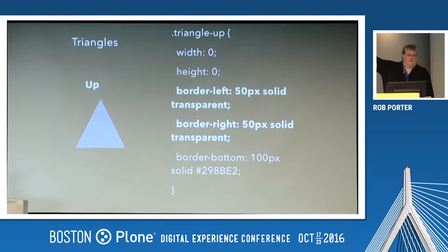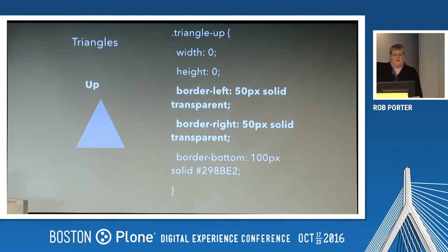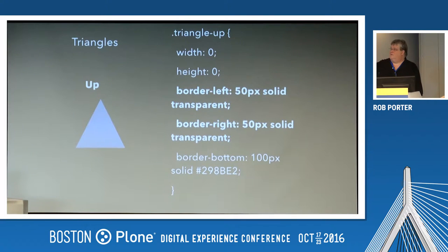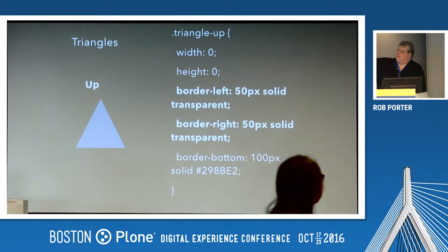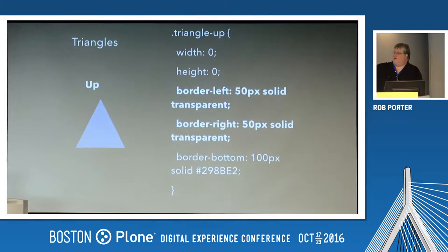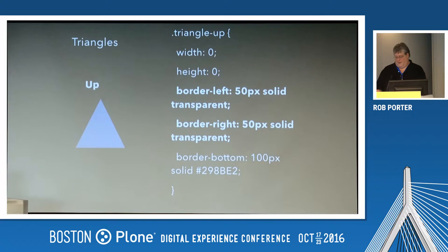For example, for triangle up, there's no pixel width or height. All this will be in working code that you guys can look at, and I'll give you my slides as well. As you can see, the border left and the border right are transparent, but the border bottom — the one coming up — has the color. If you change the transparent to white, that's the way it looks — it's sort of like three triangles.